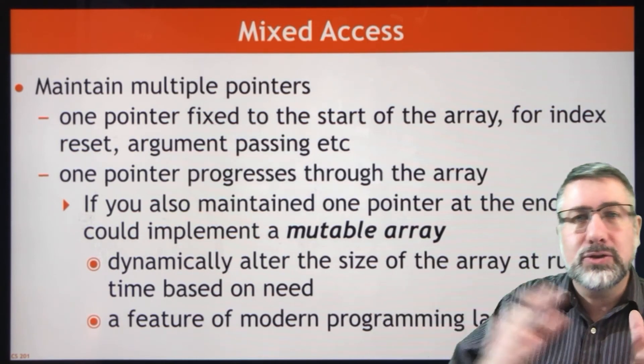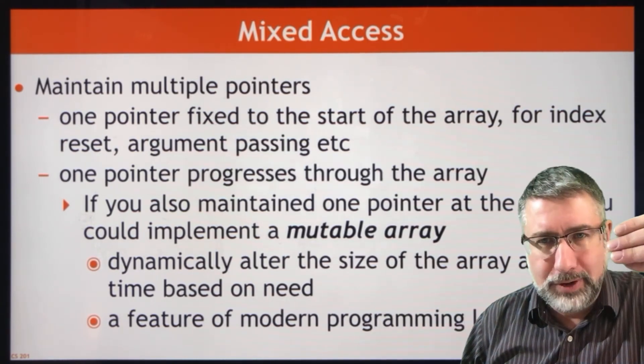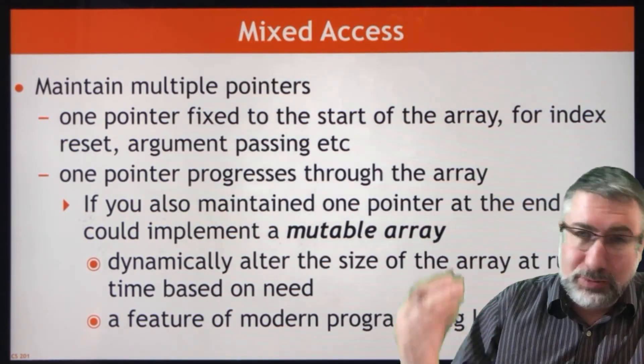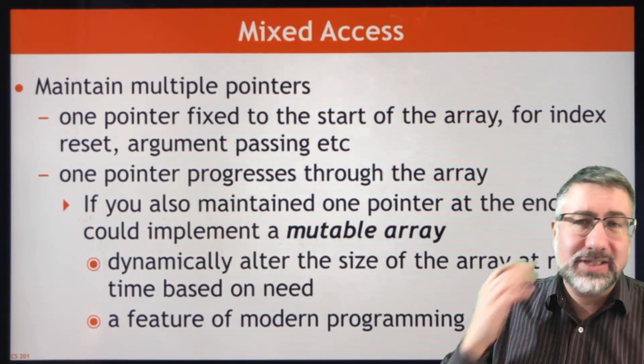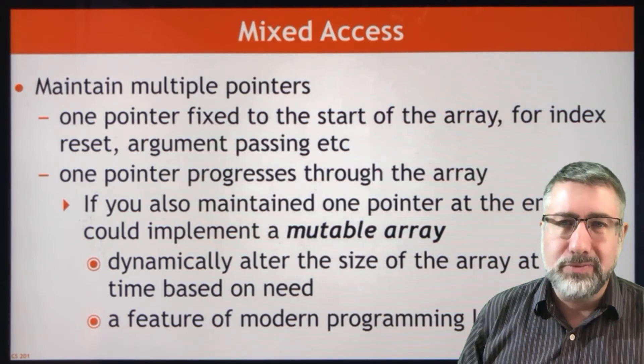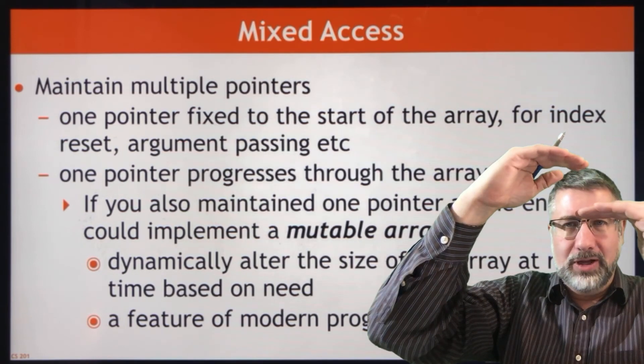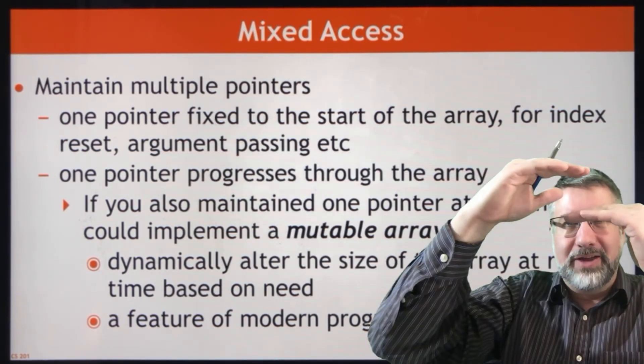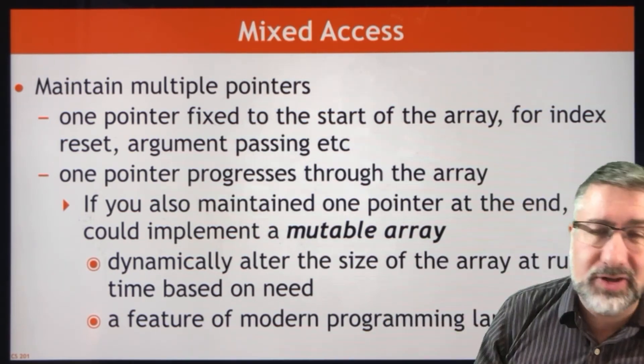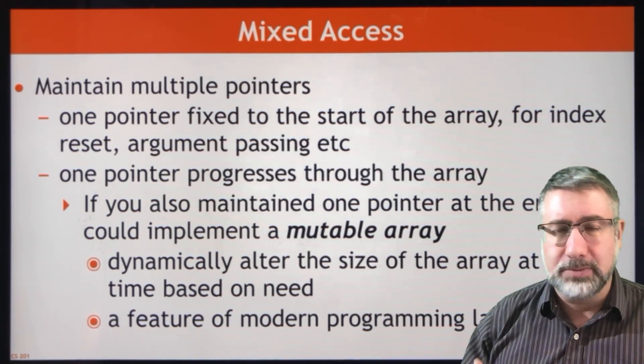The other way to do this is to do sort of both together, a mixed access where you maintain a pointer to the front, and you also maintain a pointer to the element you're interested in, and maybe you also maintain a pointer to the last element in the array. And this is actually what modern languages do when they do a mutable array, an array that can change size. Because when you allocate memory, you allocate this much memory, and then if your operating system is really conservative, it'll then allocate the next chunk of memory. And that's why in C++ you can't change the size of an array after you've allocated it. But in modern languages, a mutable array has a perfectly good data structure.